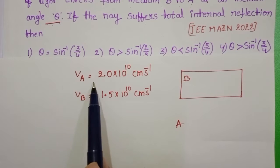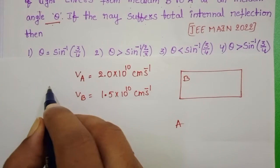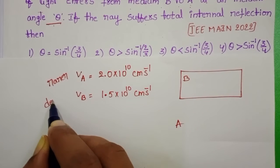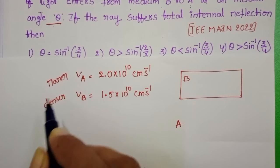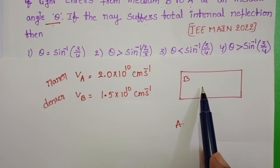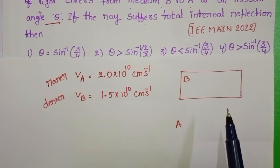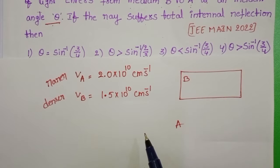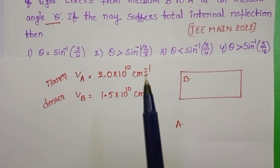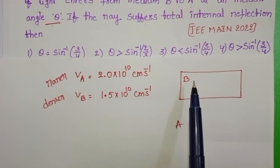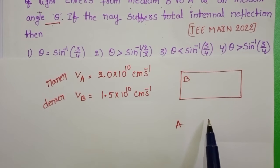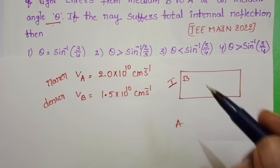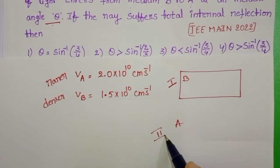That means medium A behaves like a rarer medium and medium B is a denser medium. When a light ray travels from a denser medium to a rarer medium, then only it exhibits the phenomenon of total internal reflection. So in the given question, the light ray travels from medium B to medium A. So medium B is the first medium and A is the second medium.